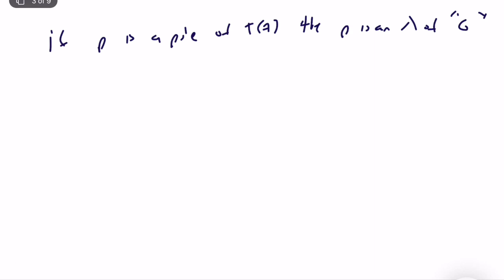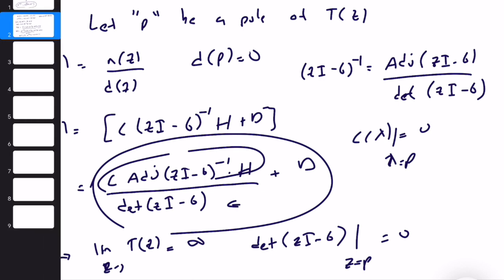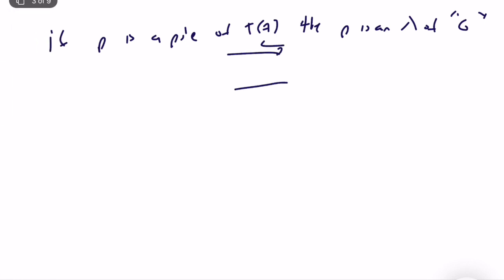The reverse may not be true. An eigenvalue can make det(zI - G) = 0, so you might assume it's a pole, but the numerator may also become zero at that same point — a pole-zero cancellation. So if there is a pole-zero cancellation, an eigenvalue is not necessarily a pole of the system. This only happens when we reduce the state-space representation to a lower-degree transfer function, meaning the representation is not minimal.